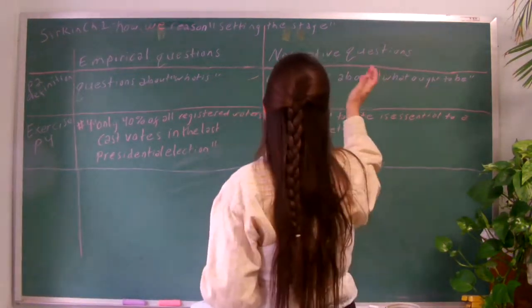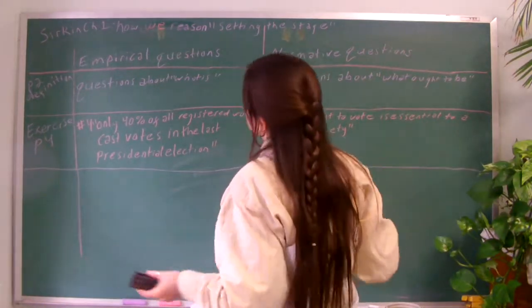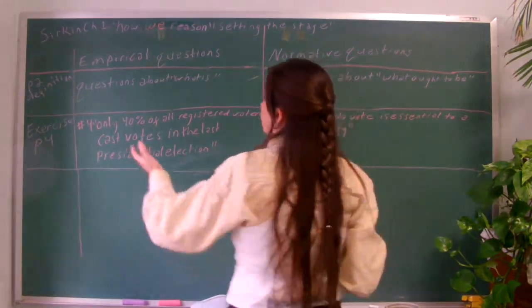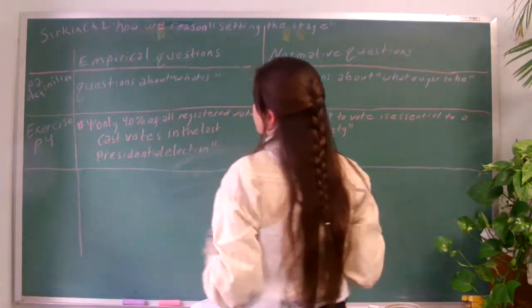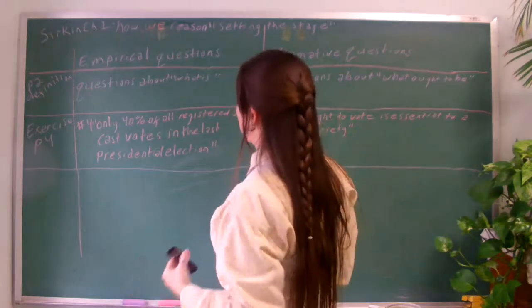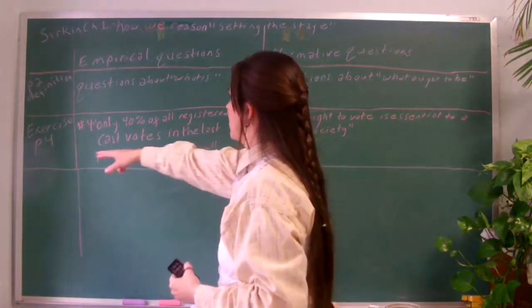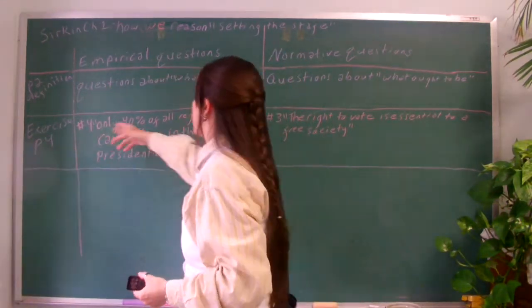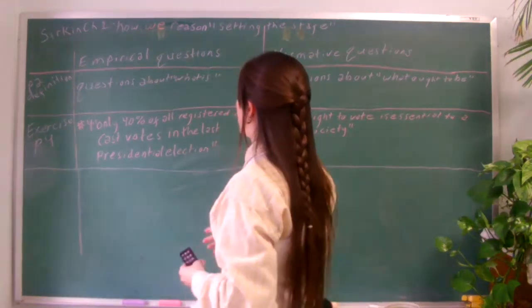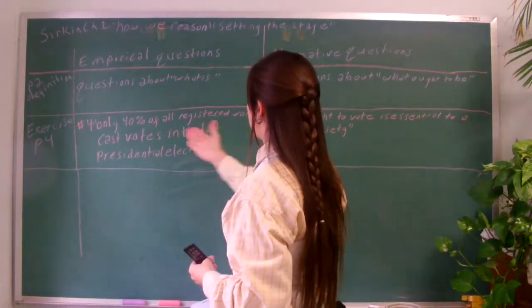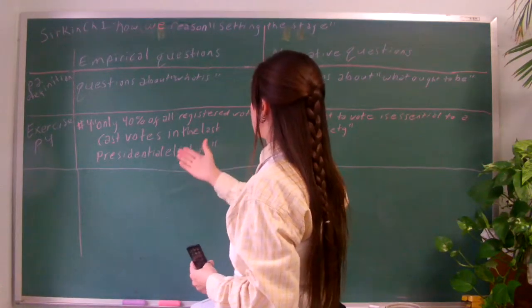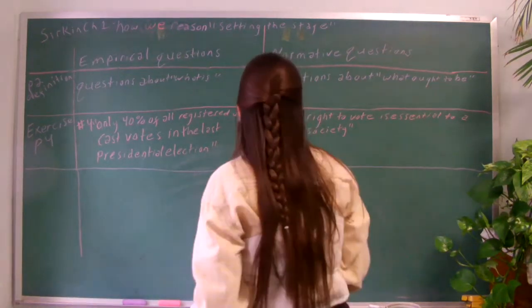We have an empirical question, we have a normative question, or questions. Part of the definition from the textbook is, for example, empirical questions are about what is. Like, what's actually going on there. And on page 3, exercise 4, they give some examples. So one is an example of a what is. Only 40% of all registered voters cast votes in the last presidential election.